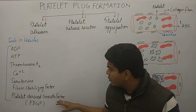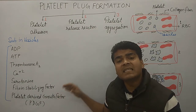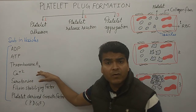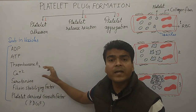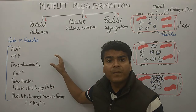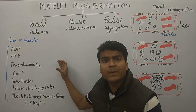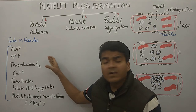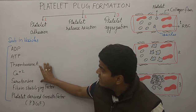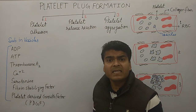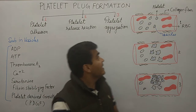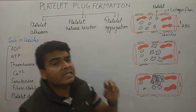Platelet-derived growth factor is very important for differentiation. Thromboxane A2 and serotonin are particularly important — serotonin helps cause vasoconstriction. These substances inside the platelets give them their stickiness.